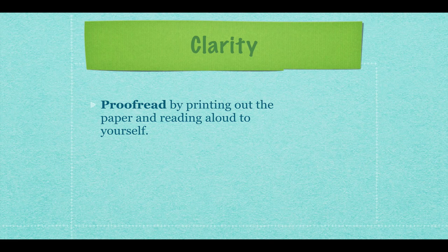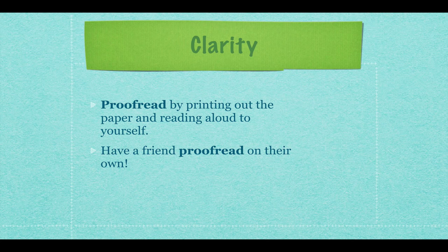The next step: have a friend proofread on their own. Once you've done your own read-aloud, take a printout of your paper, give it to a friend, and have them mark it up. They're going to see the mistakes you can't see because they're reading it for the first time with fresh eyes, and that will catch a lot more mistakes.